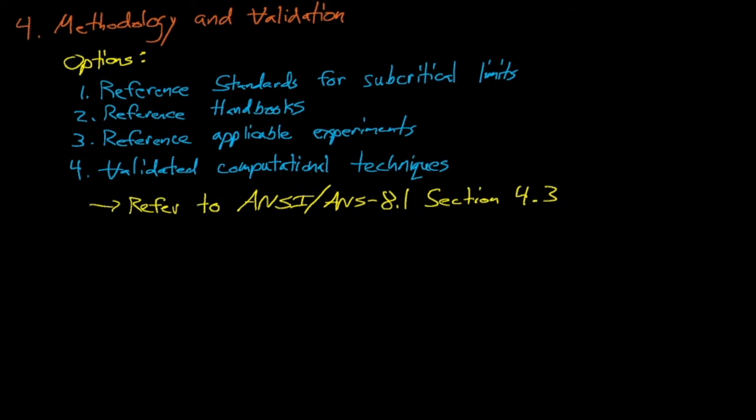Next, we move to the process analysis section, which the standard states shall be included in the CSE. In this section, we will document and analyze all normal and credible abnormal conditions and document that the process shall remain subcritical under all of these conditions. This section shall also identify all controls developed to ensure that the system remains subcritical under these conditions.